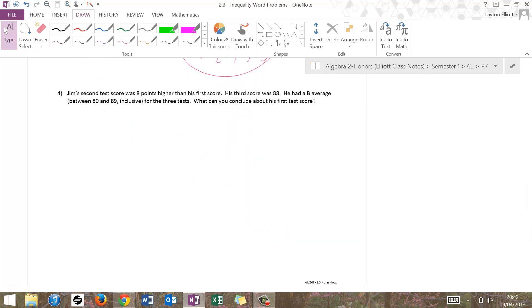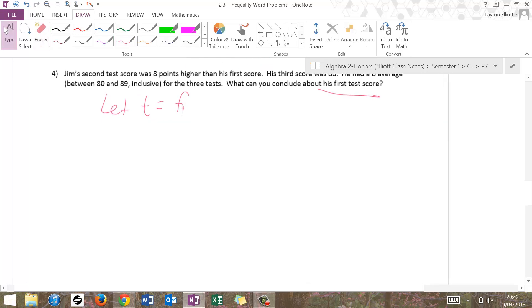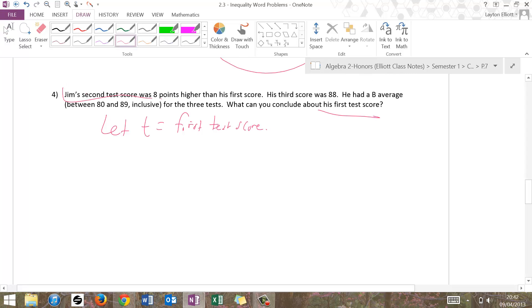Number four, we have a test for Jim. Jim's test score was 8 points higher than his first score. His third score is 88. He had a B average between 88 and 89 inclusive for the three tests. What can you conclude about his first test score? There you go. First test score. Let T equal the first test score. If T is the first test score, it says the second test score was 8 points higher. So guess what? T plus 8 equals the second test score. Please don't say let 88 equal the third test score. I mean, it's already there.